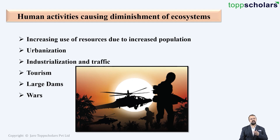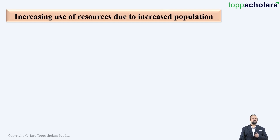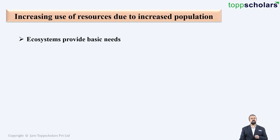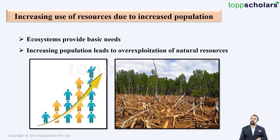The very first one is the increasing use of resources due to increased population. Ecosystems are there to provide for our basic needs. But as the population goes on increasing, it leads to the over-exploitation of these natural resources.